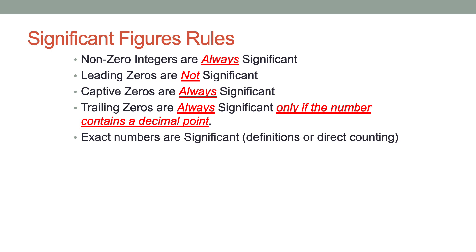The trick is to identify if the zeros are significant. There are three kinds of zeros: leading zeros, captive zeros, and trailing zeros. Leading zeros are not significant. Captive zeros are always significant. Trailing zeros are always significant only if the number contains a decimal point.